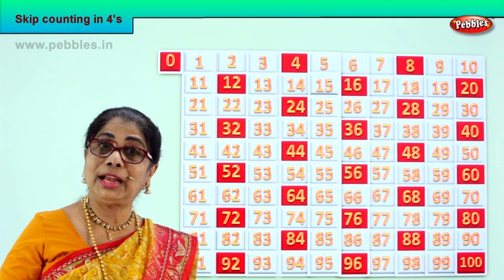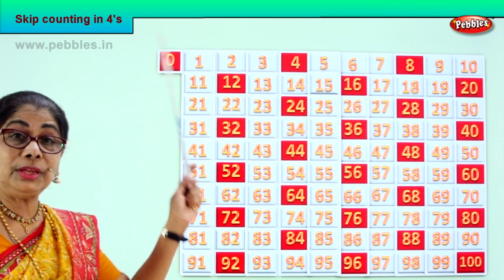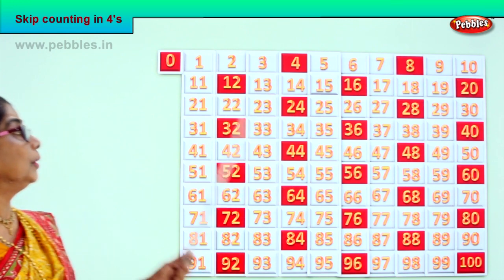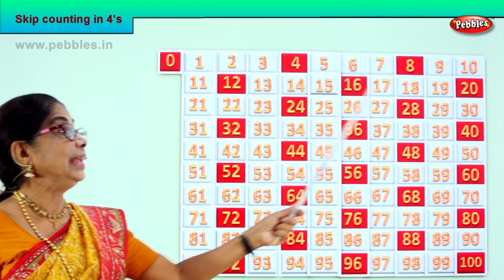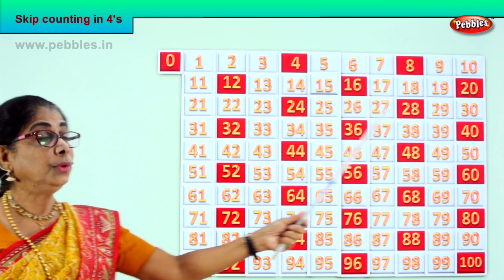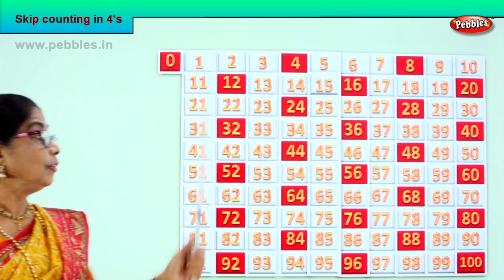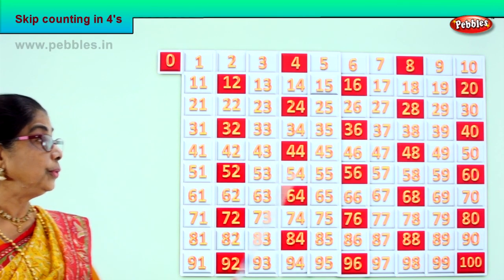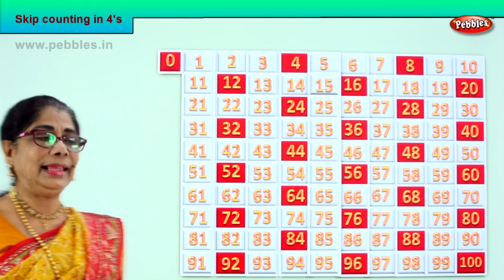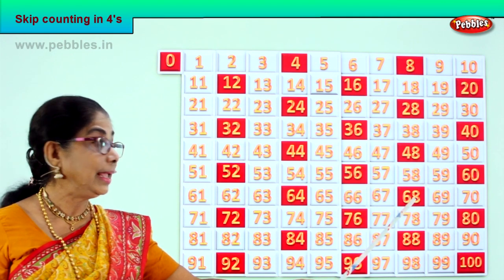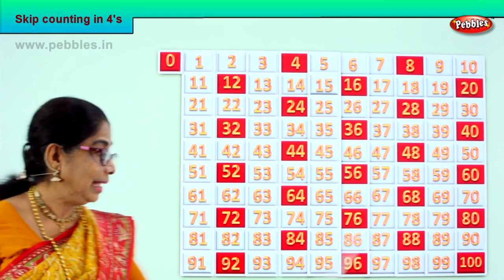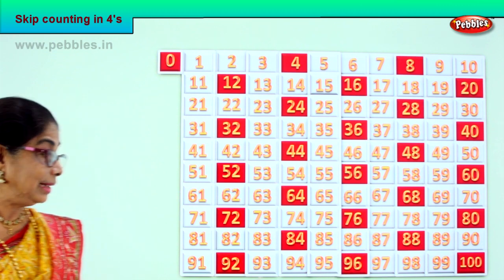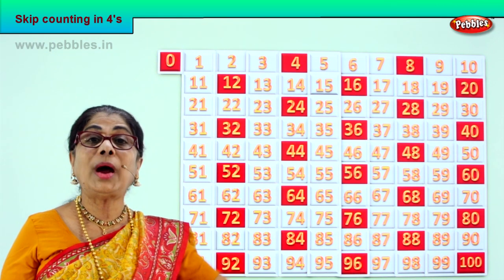Let's say all the counting in 4s from 0 to 100, and then we look at the pattern. Good. 0, 4, 8, 12, 16, 20, 24, 28, 32, 36, 40, 44, 48, 52, 56, 60, 64, 68, 72, 76, 80, 84, 88, 92, 96, 100.